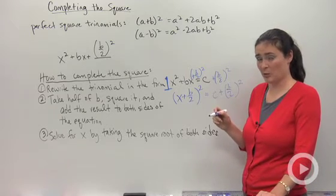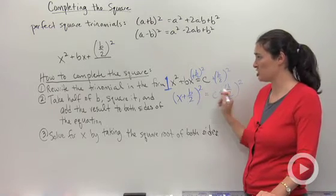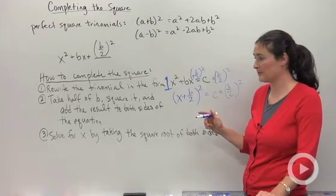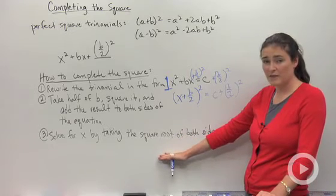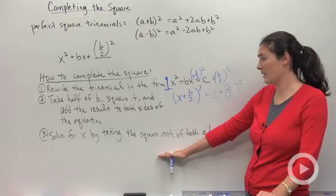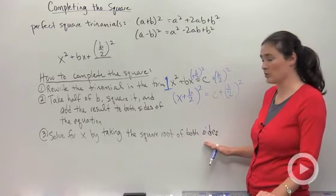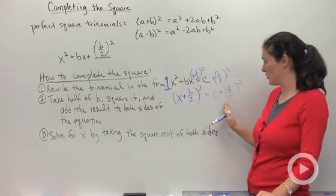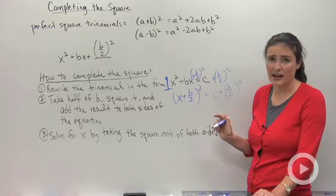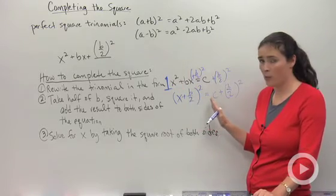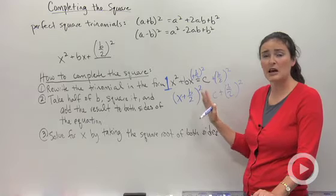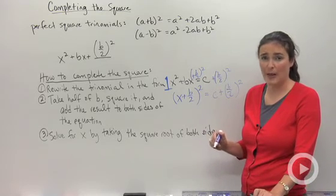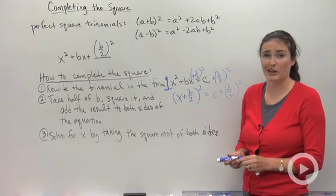The next thing I would do to finish completing the square or to solve for x would be to take the square root of both sides. So I would square root here and square root here, and then go through and solve for x. It looks really tricky when we're just looking at the formulas and symbols, but once you start trying some problems that have real numbers, it'll start making a lot more sense.